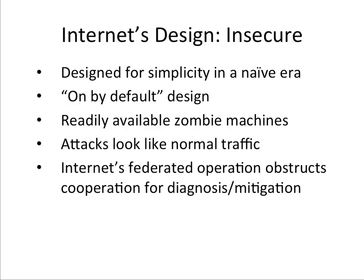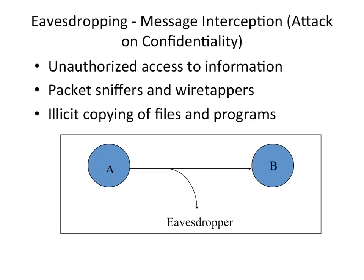Let's look at a few classes of attacks abstractly, with concrete examples in the next lecture. The first is eavesdropping — when A sends a message to B, somebody else can read that message.